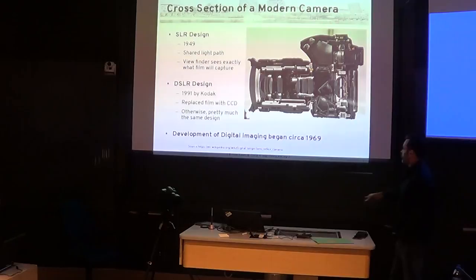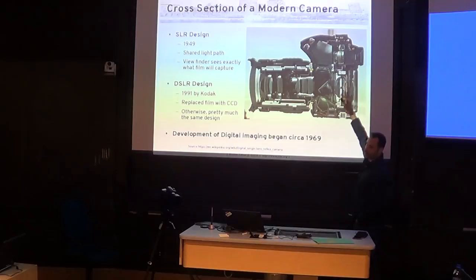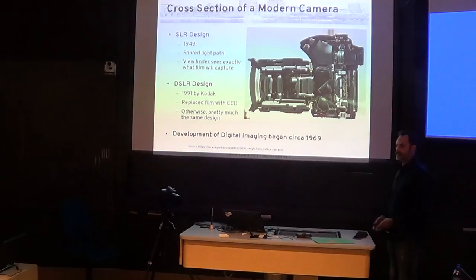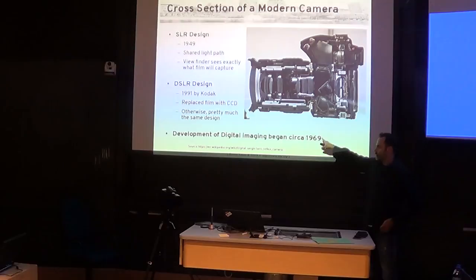What happened when we went digital is we just replaced the film carrier in the back with something that had a digital sensor on it. In the early '90s — 1991 — Kodak was among the first to develop a camera that could take the picture and analyze it and do something unique with it on the spot. There had been other work going on with digital imaging as early as 1969.